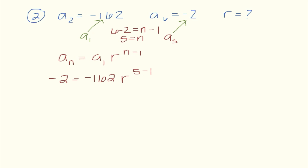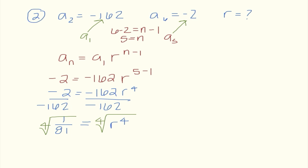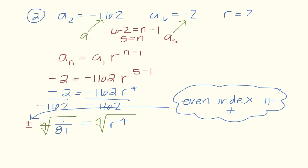We just fast-forwarded this particular sequence and made the earlier term the first term, which in turn made the later term the fifth term. Substituting into the nth term formula, we have negative 2 equals negative 162 r to the 4th power. Dividing both sides by negative 162, I have 1 over 81 equals r to the 4th. To get r all by itself, I do a 4th root of both sides. Since 4 is an even index number, I need to put plus or minus out in front. The 4th root of 1 over 81 gives plus or minus 1 third as our ratio.